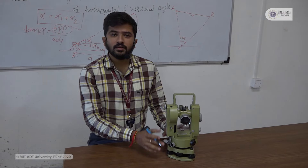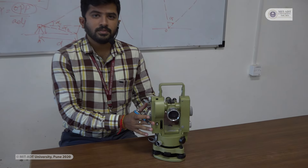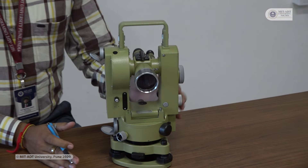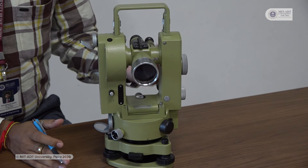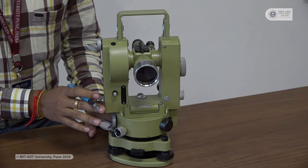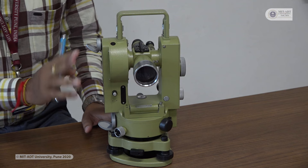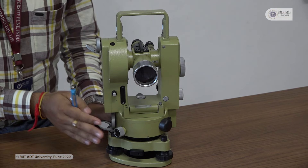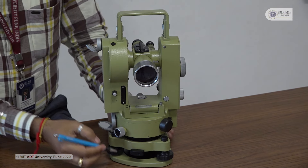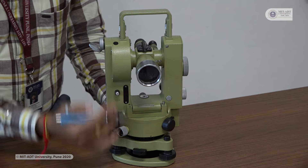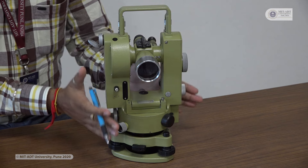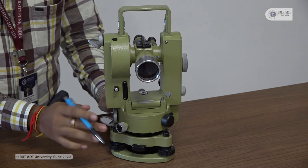We will be studying the one-second theodolite. The major difference between the one-second theodolite and the twenty-second theodolite is accuracy. In the twenty-second theodolite studied in previous semesters, an error of twenty seconds is allowed, whereas here only one second of error is allowed, meaning we are increasing accuracy and precision. The one-second theodolite is similar in appearance to the twenty-second theodolite but has many modifications and changes.